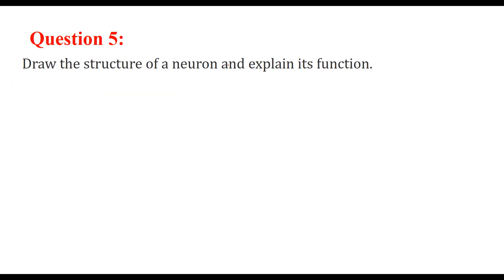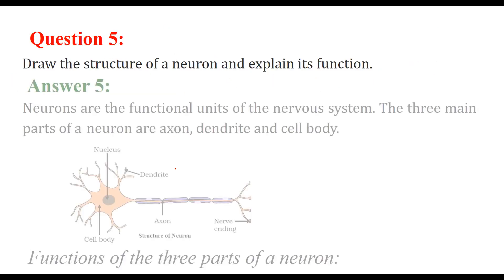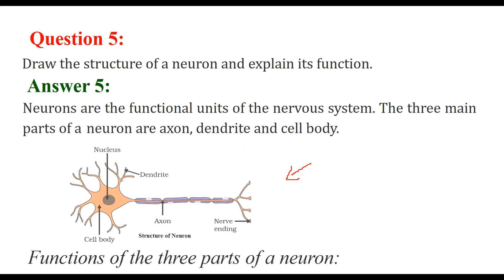Draw the structure of a neuron and explain its function. This is a neuron — the total cell, because we have a nucleus here. These are the dendrites and these are the axon. The axon transfers signals outside. The dendrite takes in the signal. The cell body is for growth and development. Neurons are the functional unit of the nervous system. The three main parts of a neuron are the axon, the dendrites, and the cell body.